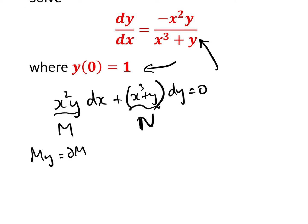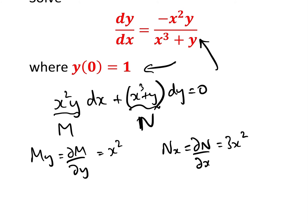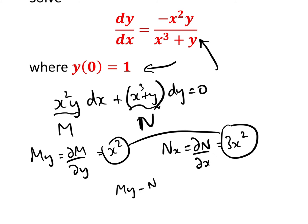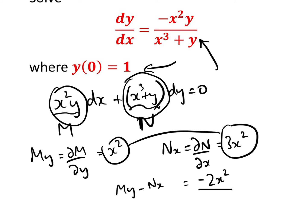Now we want to look at M_y, i.e., dM/dy. Well, M_y = x². Now we want to look at N_x, the partial derivative of N with respect to x, and that equals 3x². So they're not quite the same — it's not an exact differential equation, but they're nearly the same. Let's have a look at M_y − N_x, which will be −2x². If we divide that by −M, where M = x²y, the x² cancels out, leaving us with 2/y.